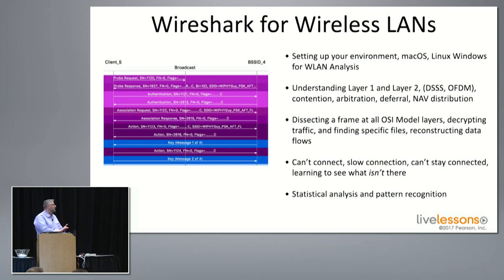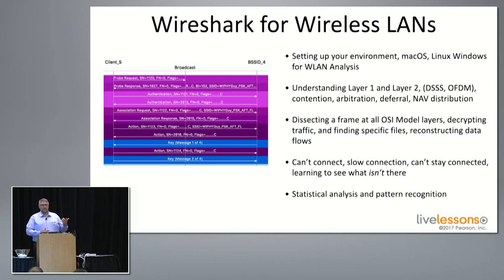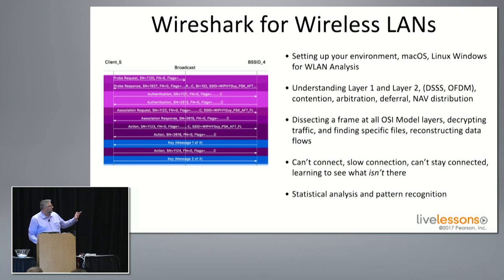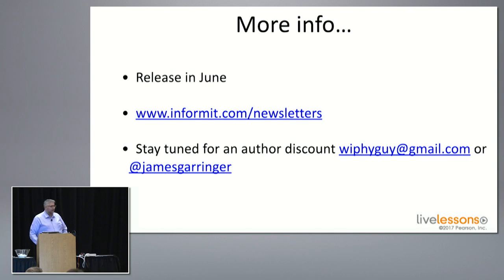Finally we get into more advanced statistical analysis and pattern recognition. For example, if you're doing a capture with a hex view and you want to search within an SMB capture for the file signature of a PCAPNG file — 0A, 0D, 0D, 0A — how do you find those files and pull them out to see what was transferred across the network? This is the second course; both courses will be tentatively released in June.